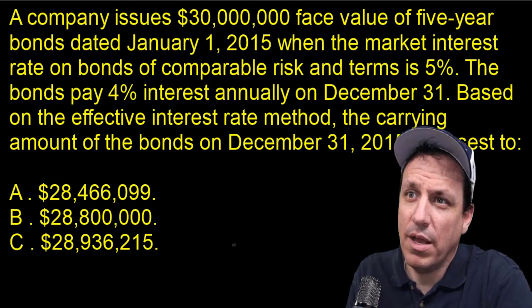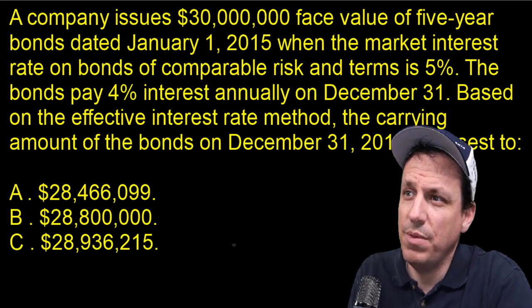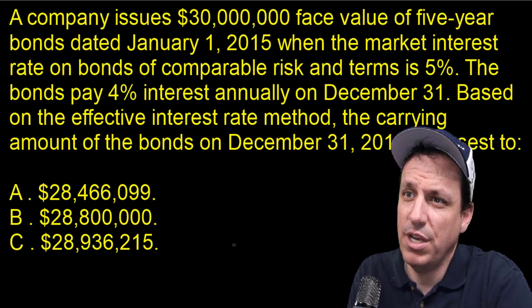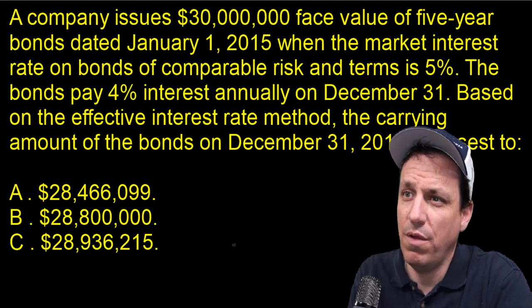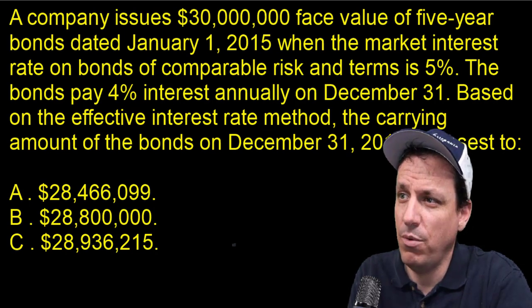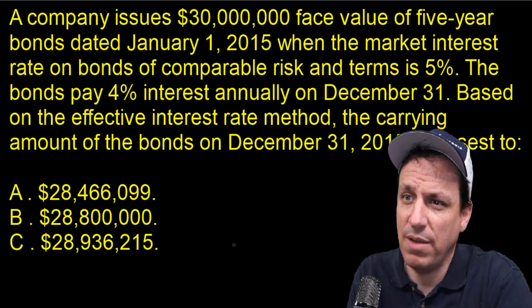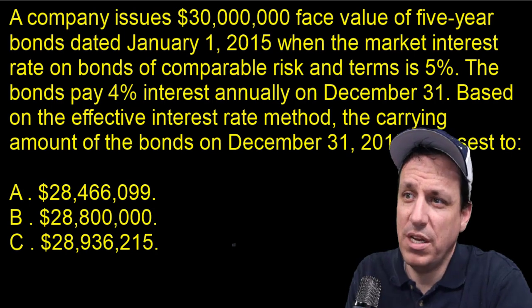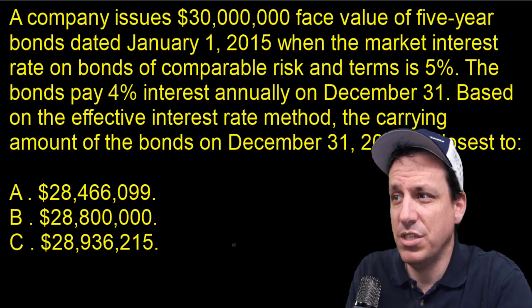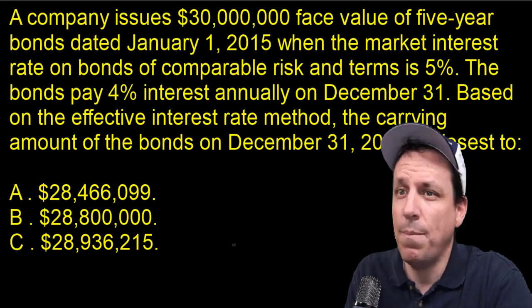This is another bond problem. A company issues $3 million face value five-year bonds dated January 1st, 2015, when the market interest rate on bonds of comparable risk and terms is 5%. The bonds pay 4% interest annually on December 31st.